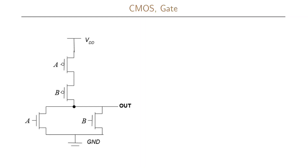Now let us look at another example of a gate. Again we have our voltage supply and ground. This time we have two P-type transistors connected in series and two N-type transistors connected in parallel. We again have two inputs A and B, where A is connected to the gate of a P transistor and to the gate of an N transistor, and similarly input B is connected to the gate of a P transistor and to the gate of one of our N transistors. Then we have our output from the gate.